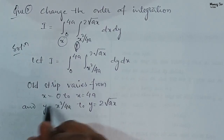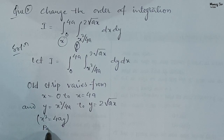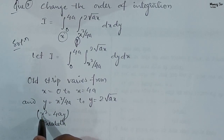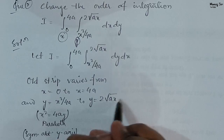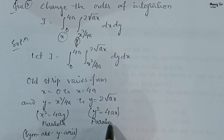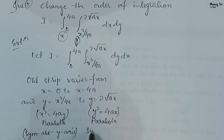We can rewrite x² / 4a as x² = 4ay, which is an equation of a parabola. Since the power of x is even, this parabola is symmetric about the y-axis. For the second curve, y = 2√(ax) — squaring both sides gives y² = 4ax, which is again a parabola. Since the power of y is even, this parabola is symmetric about the x-axis.